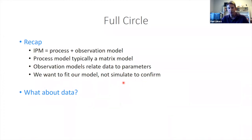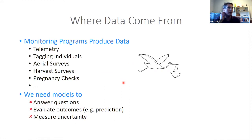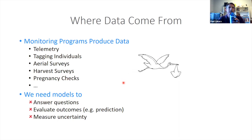There's also a data side to this that we need to be thinking about. Our monitoring programs produce all sorts of data — it might be telemetry, tagged individuals, aerial surveys, pregnancy checks, counts of cubs with mom, all sorts of data. We need our model to be able to answer questions, evaluate our uncertainty, predict forward with uncertainty that comes along with that.